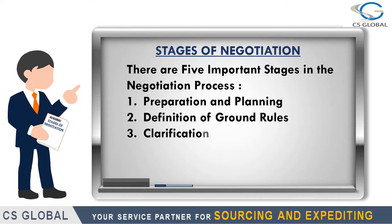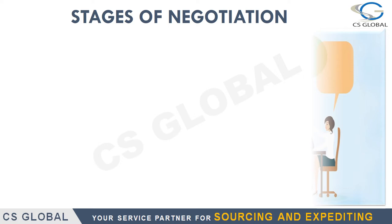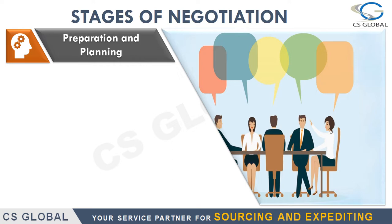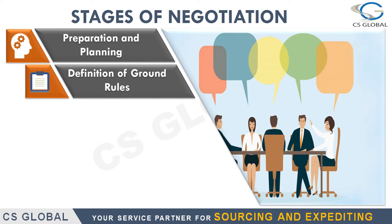Let's look at them one by one. The first stage is preparation and planning. This is the first step in the negotiation process, where both parties will organize and accumulate the information necessary to have an effective negotiation, with proper planning to achieve your best alternative to a negotiated agreement.